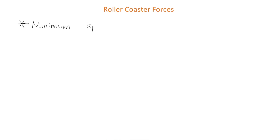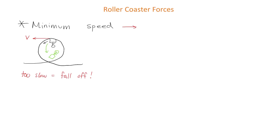Questions that come up a lot when dealing with roller coasters refer to the minimum speed the roller coaster needs. The rider could fall off if they're going too slow, so we want to determine the minimum speed needed to not fall off. The minimum speed is equal to the square root of rg, where r is the radius and g is the acceleration due to gravity.